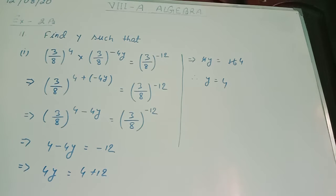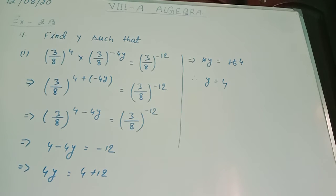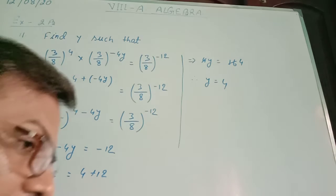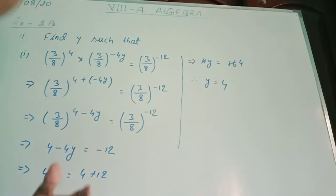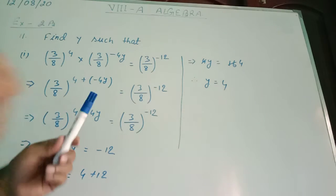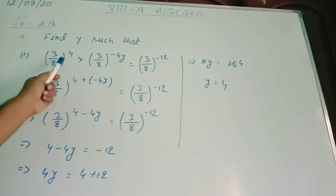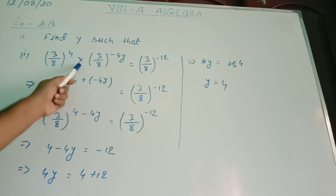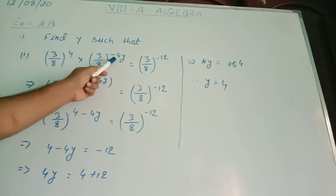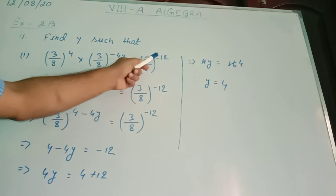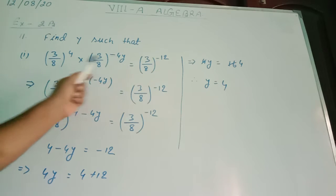Good morning, students of Class 8A. In this period of algebra, we are solving Exercise 2B, question number 11, Roma number 1. The question is: (3/8)^4 into (3/8)^(-4y) equal to (3/8)^(-12).